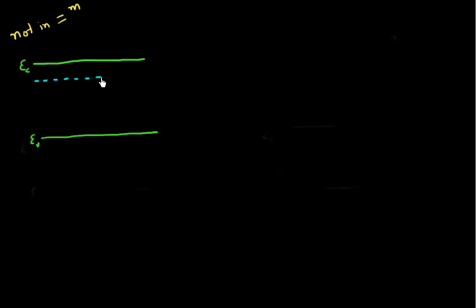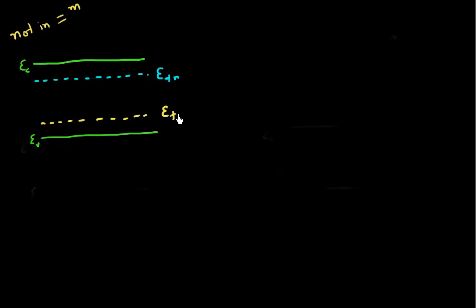These two quasi-Fermi levels each describe the population of electrons and holes. The first quasi-Fermi level, EFN, tells me the probability of occupation of electrons in the conduction band. The second quasi-Fermi level, EFP, gives me the probability of occupation of carriers in the valence band — so it tells me the number of holes, or how electrons are occupied in the valence band.